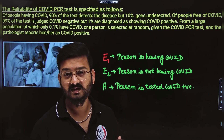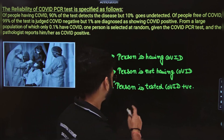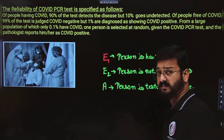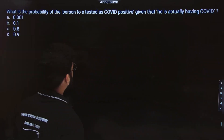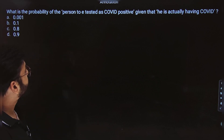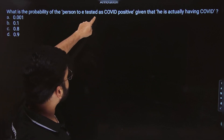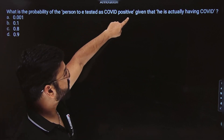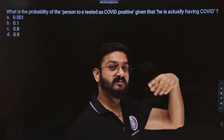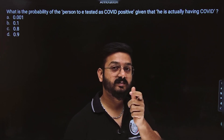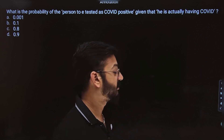Once you have defined the events, you can now solve the question. Let's start solving one by one. The question asks: what is the probability that a person is tested as COVID positive, given that he's actually having COVID? The moment the words 'given that' come, we are using conditional probability.